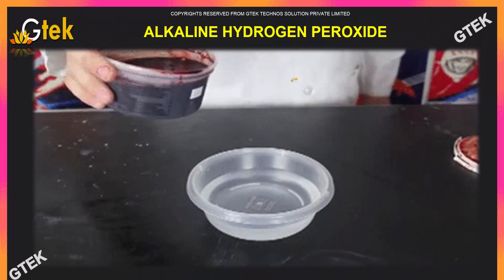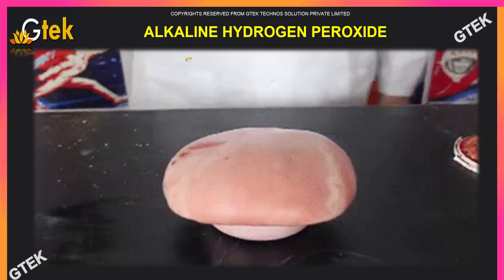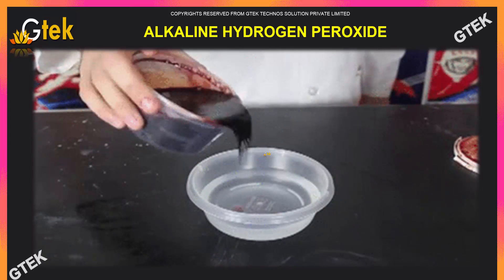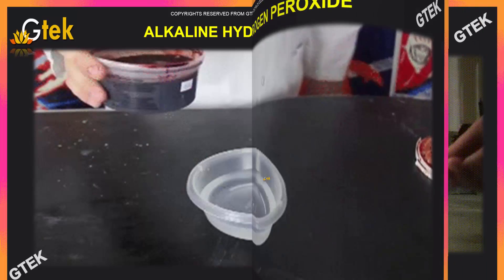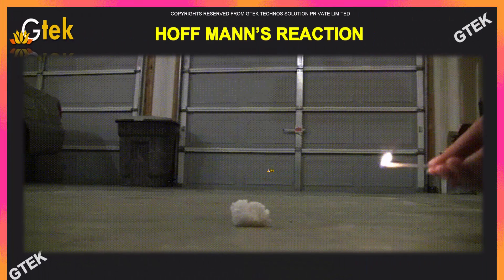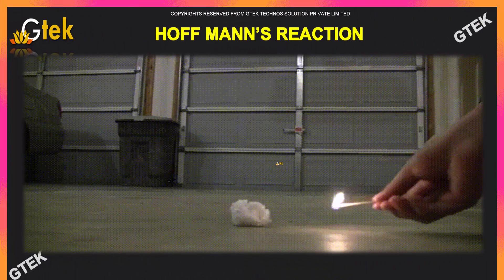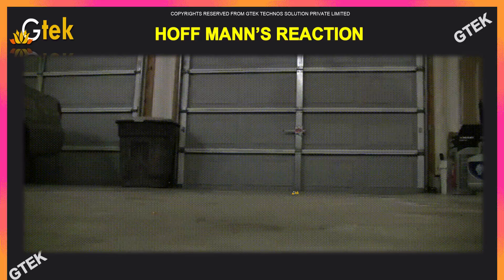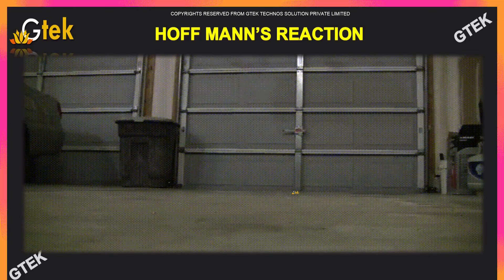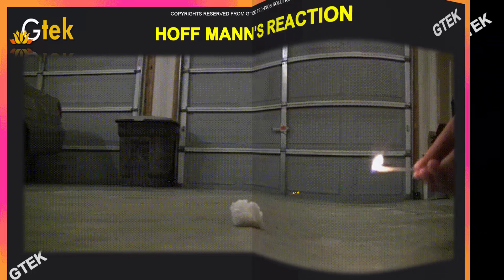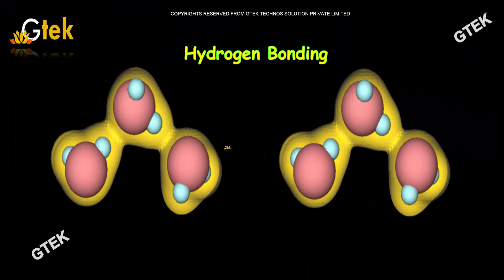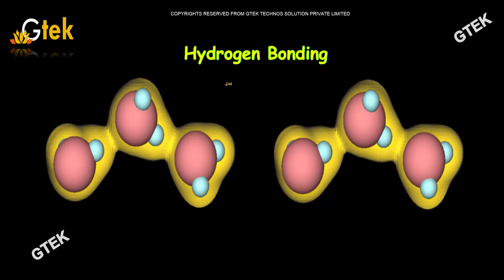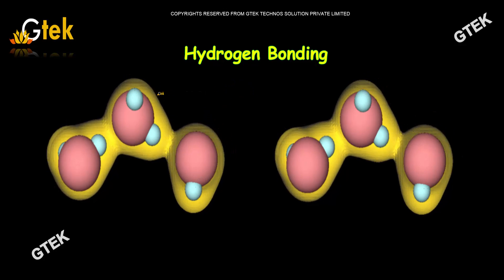This is a practical example of Alkaline Hydrogen Peroxide. And this is the Hoffman's reaction process. And this is a typical example of how hydrogen bonds are formed in a compound.